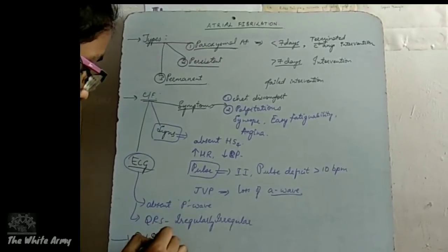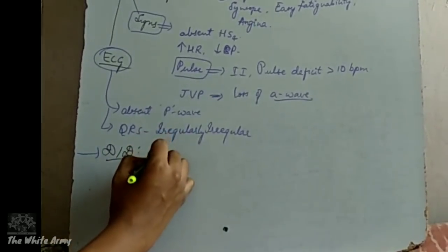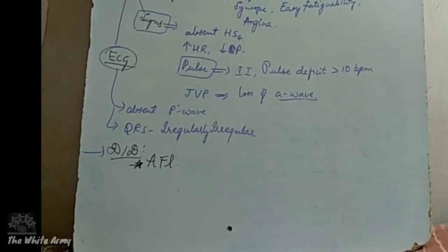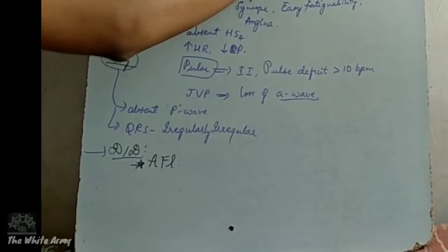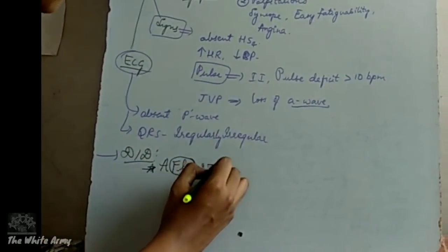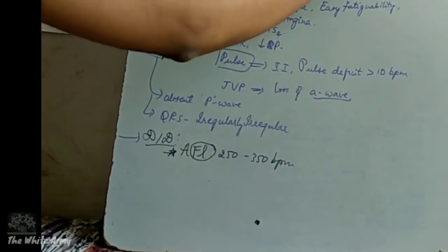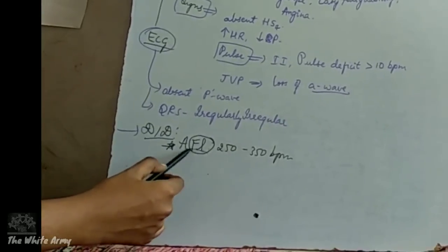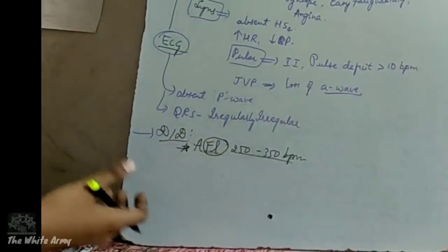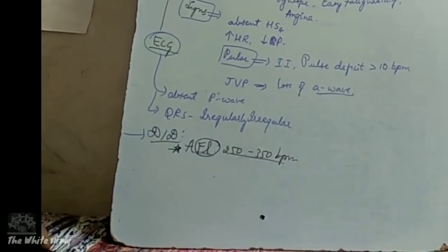Lastly, what differentials will you give for atrial fibrillation? It will often be confused with atrial flutter. In atrial fibrillation, the atrial impulses are 350 to 600 beats per minute, whereas in atrial flutter it is just 250 to 350 beats per minute. To remember: 'fibrillation' has more letters, hence more beats; 'flutter' has fewer letters, so fewer beats. Other differentials include multifocal atrial tachycardia, wandering atrial pacemaker, and atrial tachycardia with variable block.